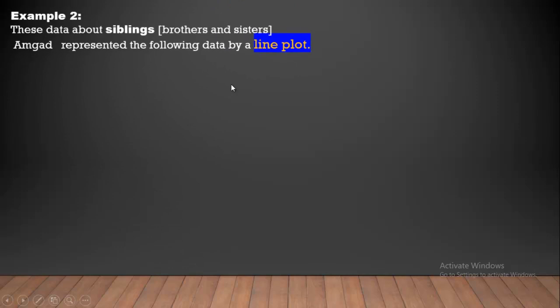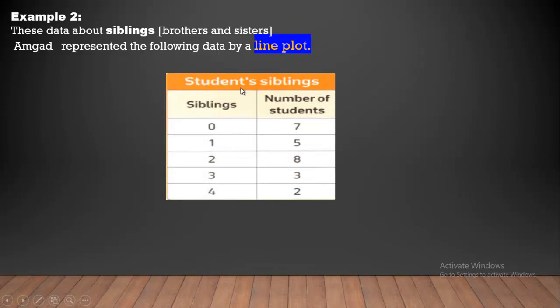Example number 2. This data about siblings, brothers and sisters. I'm going to represent the following data by a line plot. Students' siblings 0, number of students 7, siblings 1, number of students 5, 2, 8, 3, 3, 4, 2.